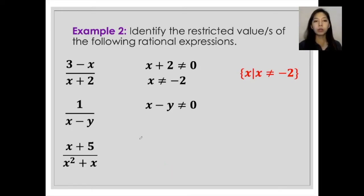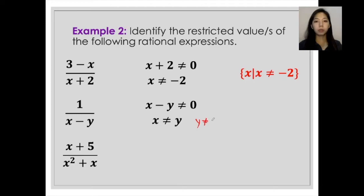Since we are solving for the restricted value of x first, we add positive y to both sides, giving us x is not equal to y. And since this shows the reflexive property, y should not be equal to x as well. Written in set notation, this gives us the set of x such that x is not equal to y.